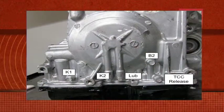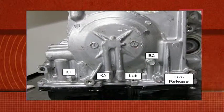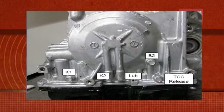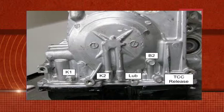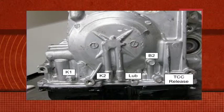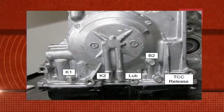Now, in this particular case with the O9G, we do not have a line pressure tap — all we have are clutch pressure taps. So when you're actually hooking up a gauge to, say, the K1 clutch, all you're looking at is the K1 clutch pressure, which, when in gear, should be line pressure.